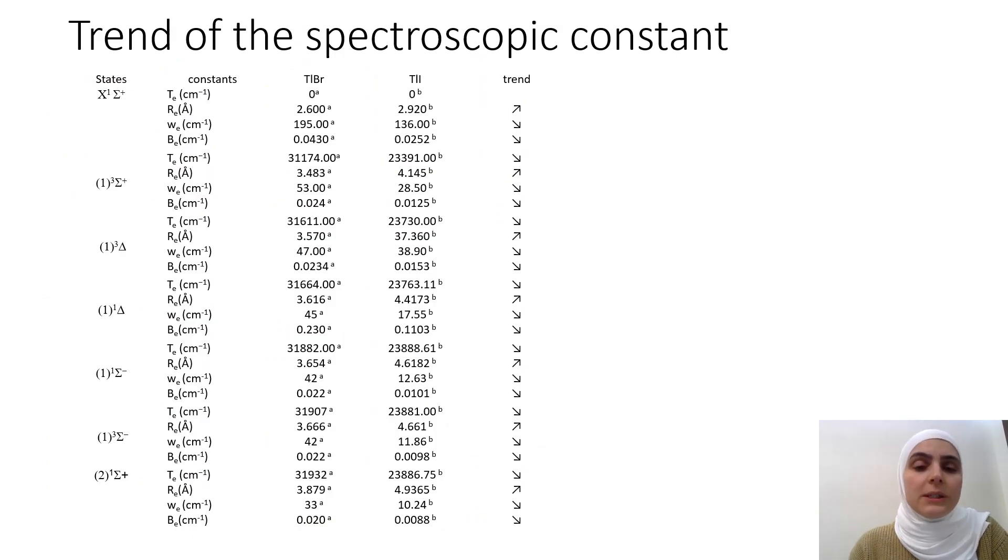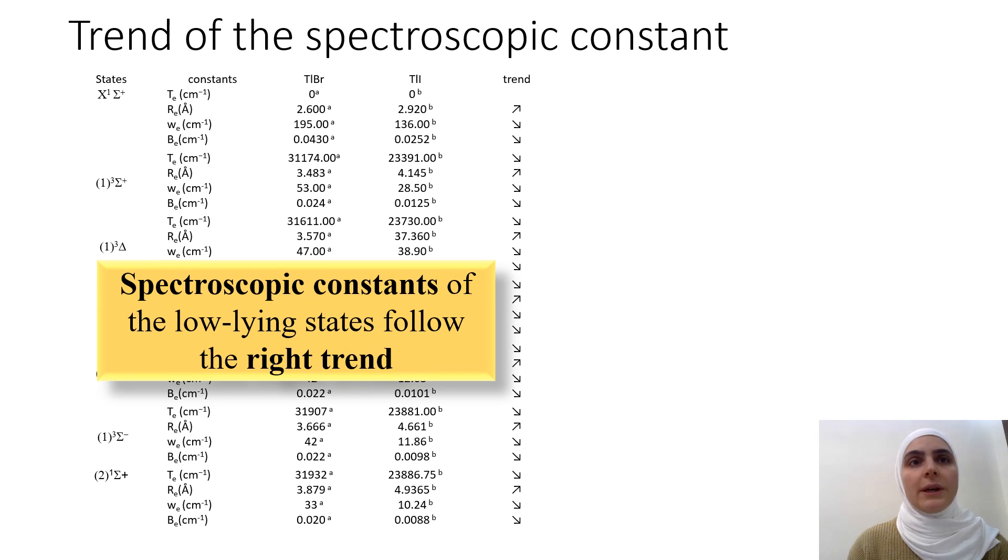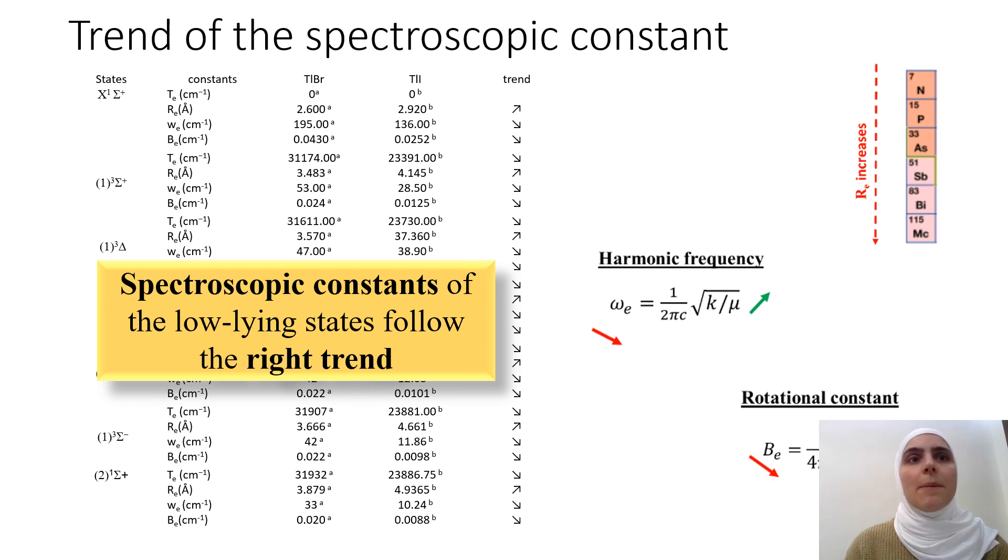To prove the credibility of our investigated values of the TLI molecule, we show this table, the trend of the spectroscopic parameters between TLBR molecule and our obtained values for the TLI molecule. From bromine to iodine, in the periodic table, the rotational constant Be decreases as the reduced mass increases. This table also confirms the increase in bond length Re and the decrease of harmonic frequency omega e with the decrease of the electronegativity for all the considered electronic states, which can confirm the reliability of our work.